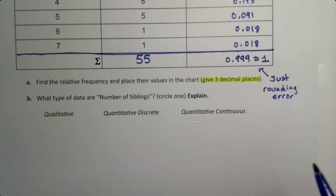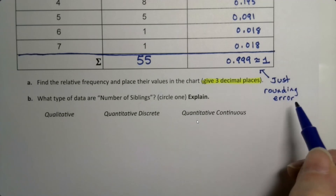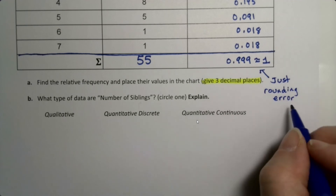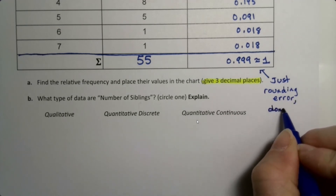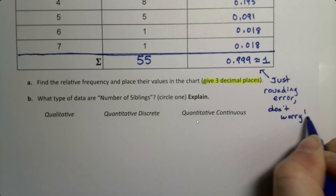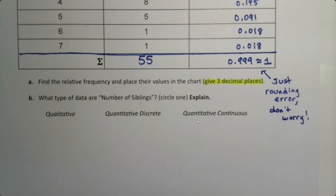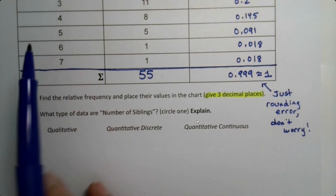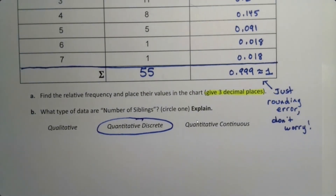A rounding error doesn't mean you've done anything wrong — it's due to the very nature of the fact that you are rounding. We found the relative frequencies and placed their values in the chart. Now, what type of data are the number of siblings? That's discrete — quantitative discrete. They're numerical, you can do meaningful calculations from them. They're discrete because you either have two siblings or three siblings — you can't have 2.36 of a sibling.